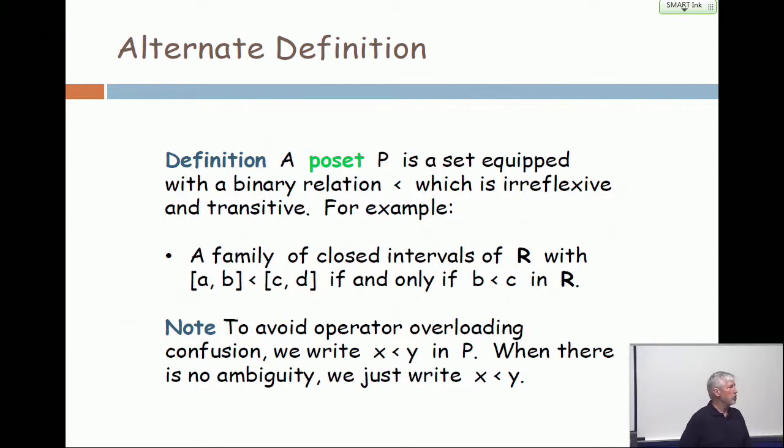And I'm depending on you as my compilers in residence to sort out the meaning based on the data types. On the left part of that sentence where it says brackets [a,b] is less than [c,d], see that less than right there? That means one thing. Now, scan over a little bit where it says b less than c in R. That less than means something completely different.